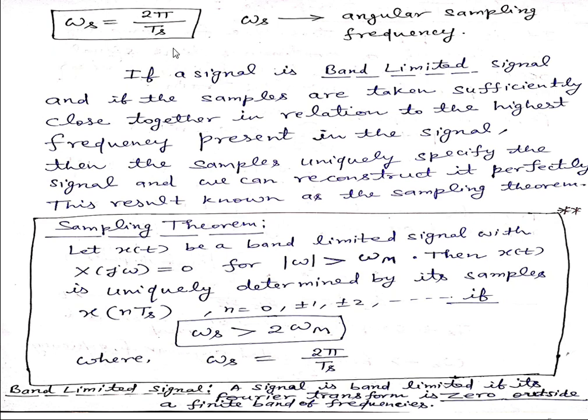If a signal is band-limited signal, band-limited means a signal which is present for a particular frequency range. If we will take the Fourier transform sequence and that is present for a particular frequency range, then that signal is known as band-limited signal. Here you can see the definition: a signal is band-limited if its Fourier transform is 0 outside a finite band of frequencies.